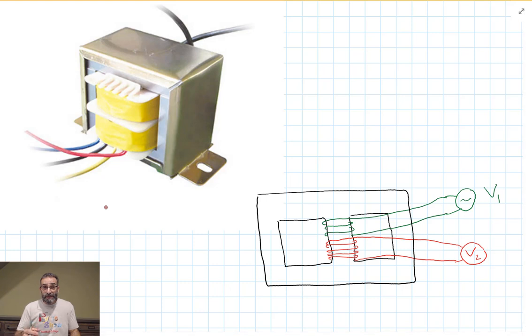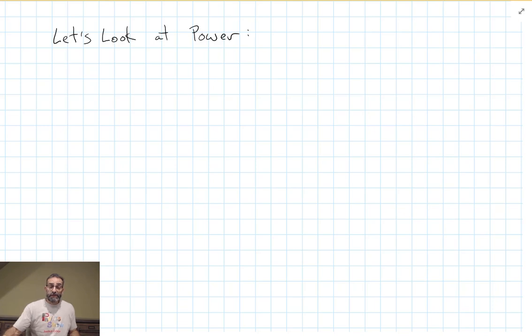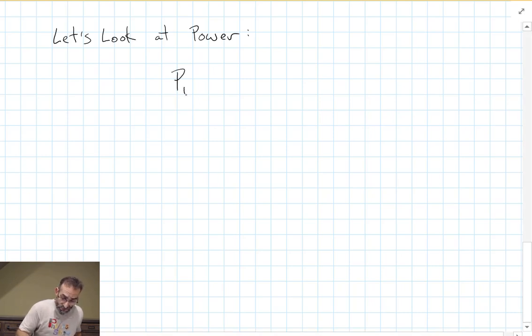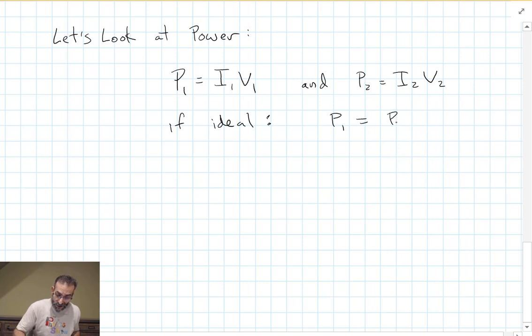Now, an ideal transformer would be 100% efficient. All the energy from one coil would get transmitted through the other coil. In real life, they're pretty close. They're 90 to 99% efficient. So let's take a look at the power generated on the input side and delivered to the output side. The power on the input side, P1, is I times V. And the power on the output side is also I times V. If we have an ideal transformer, the power has to be equal because we have no energy lost. Everything we put in, all the power, all the energy we put on the input side, we get out on the output side. That's an ideal transformer. We know that they're not quite ideal, but they're pretty close in real life.